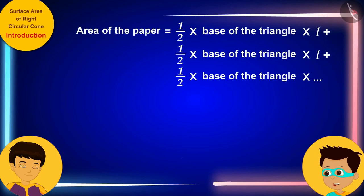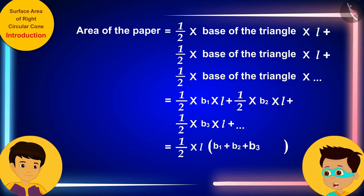Now, if we represent the bases of all these triangles by writing B1, B2, B3, etc. respectively, then we can write the sum of the areas of all these triangles in this way.